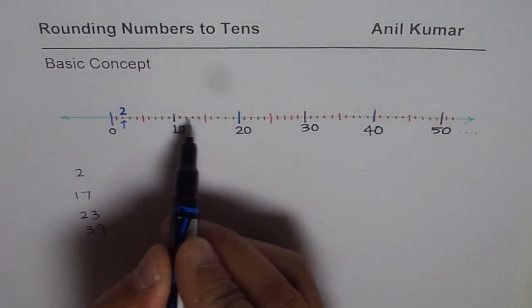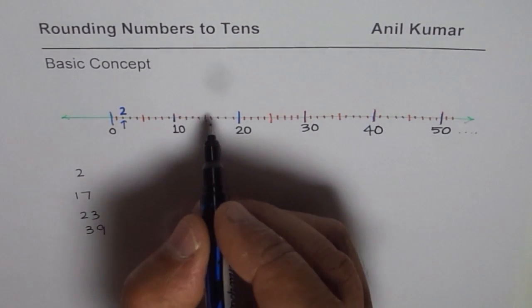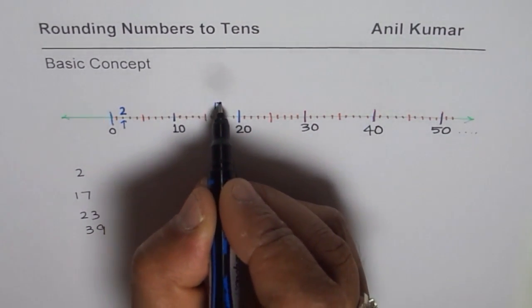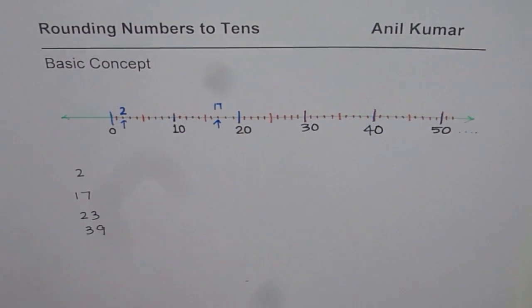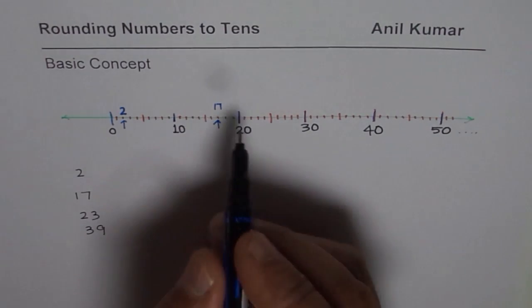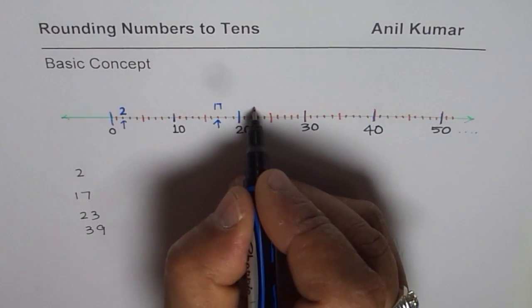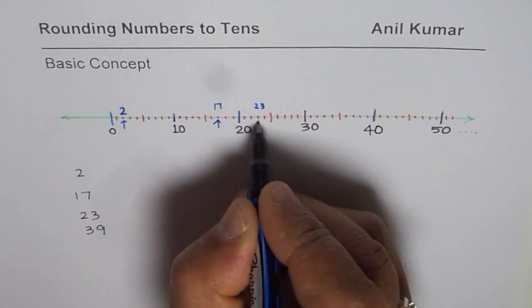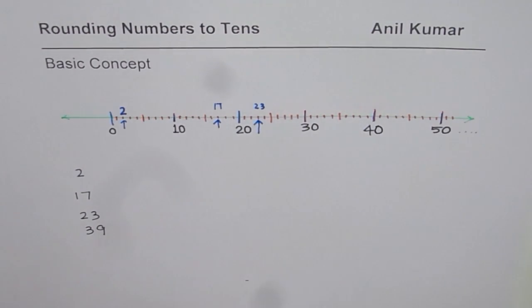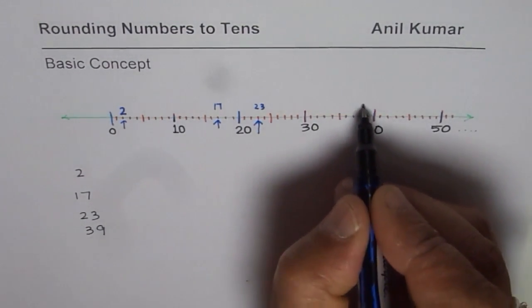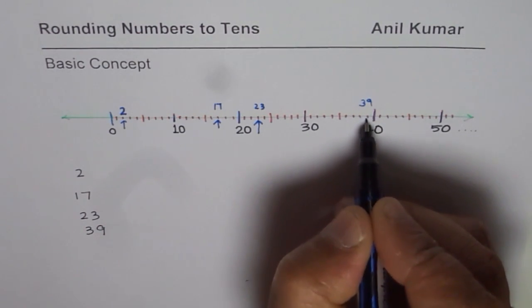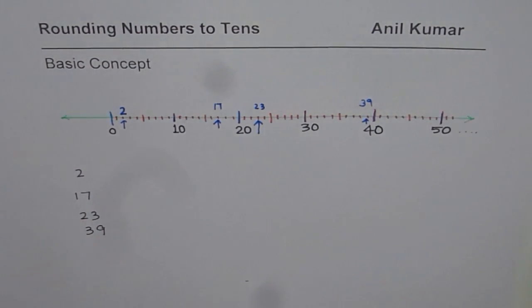17. So 10, this is 15, 16, 17. So that is 17 for us. Let me write here 17 and mark 17 with an arrow. 23. So 20, 21, 22, 23. 23 is right there. So this number is 23. 39 is 1 less than 40. So these are the numbers 2, 17, 23, 39 on a number line.